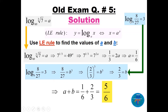For part b: log base b of (8/27) equals 3. Using the LE rule: 8/27 equals b cubed. Since 8/27 equals (2/3) cubed, taking the cube root of both sides gives b equals 2/3. Adding a plus b: one-sixth plus two-thirds equals one-sixth plus four-sixths equals five-sixths.